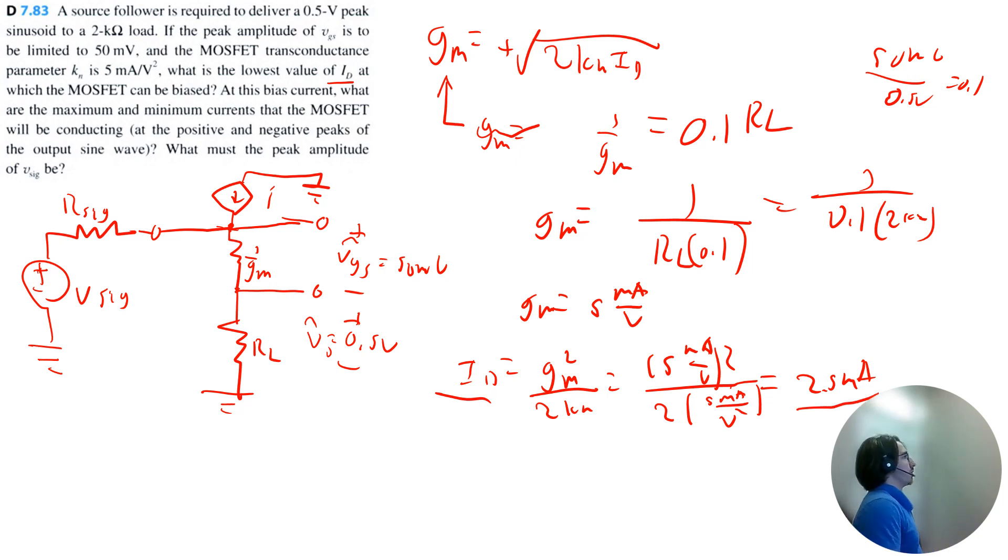At this drain current, what are the maximum and minimum currents that the MOSFET will be conducting? So what does that mean? That's basically asking for lowercase i sub capital D, which is including the DC current, which we just solved for, plus the AC current.